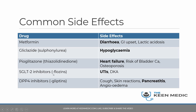The SGLT2 inhibitors — empagliflozin and dapagliflozin — can cause recurrent urinary tract infections. They have also been known to cause diabetic ketoacidosis. If a patient comes into A&E with DKA and is on any flozin, these should definitely be stopped. They should also be stopped in patients with recurrent urinary tract infections. If unsure, always seek the opinion of the endocrine team.